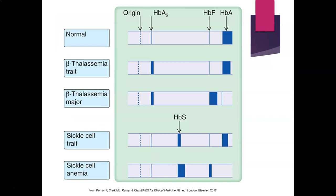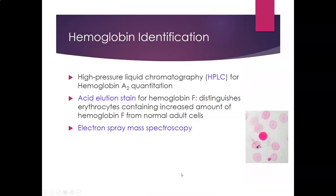On the electrophoresis patterns: a normal hemoglobin shows hemoglobin A2, hemoglobin F, and predominantly hemoglobin A. In beta thalassemia trait, hemoglobin A2 and F are increased with slightly less hemoglobin A. In beta thalassemia major, there is a large amount of hemoglobin F and very little hemoglobin A. In sickle cell trait, there is both hemoglobin S and hemoglobin A. In sickle cell anemia, there is no hemoglobin A—predominantly hemoglobin S, some hemoglobin F, and a small amount of A2. High-pressure liquid chromatography can also be used for hemoglobin A2 quantitation.